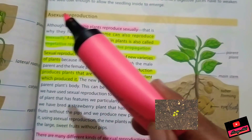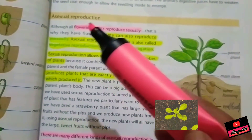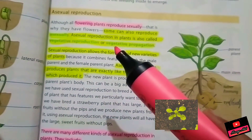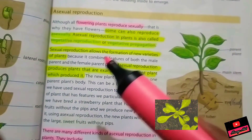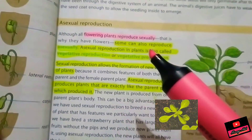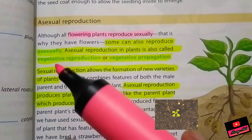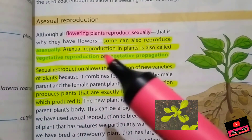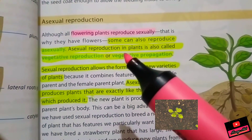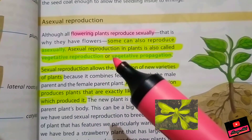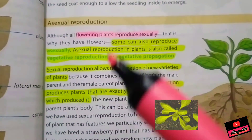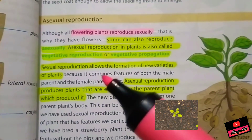Today we will do asexual reproduction. Flowering plants produce sexually through flowers, but they can also be planted or propagated by asexual methods. This reproduction is called asexual reproduction. Asexual reproduction is also called vegetative reproduction because it does not utilize flowers — that's why it is called vegetative propagation.